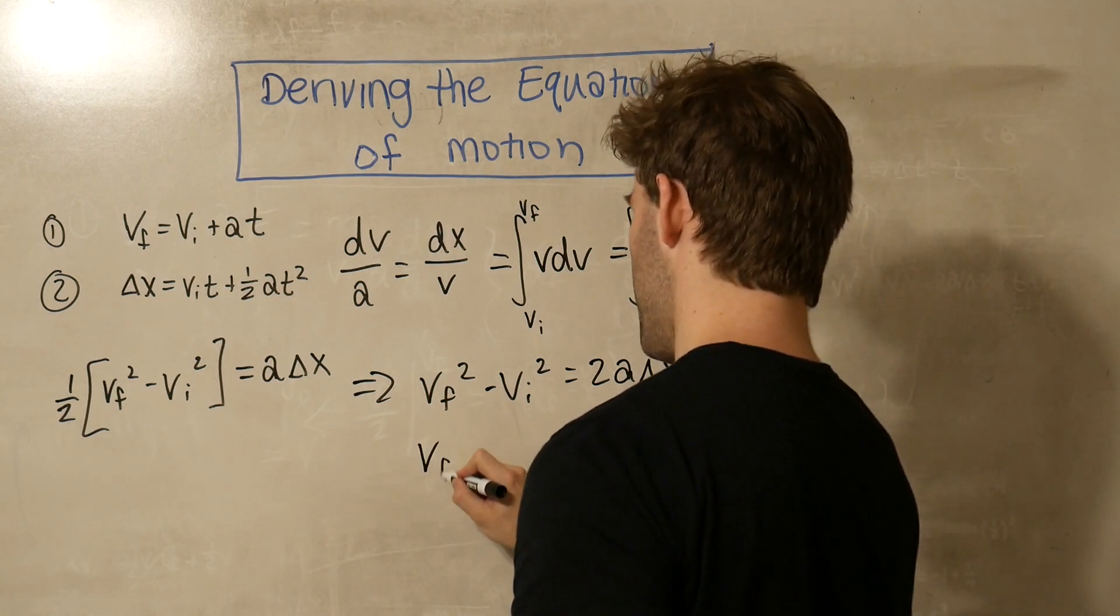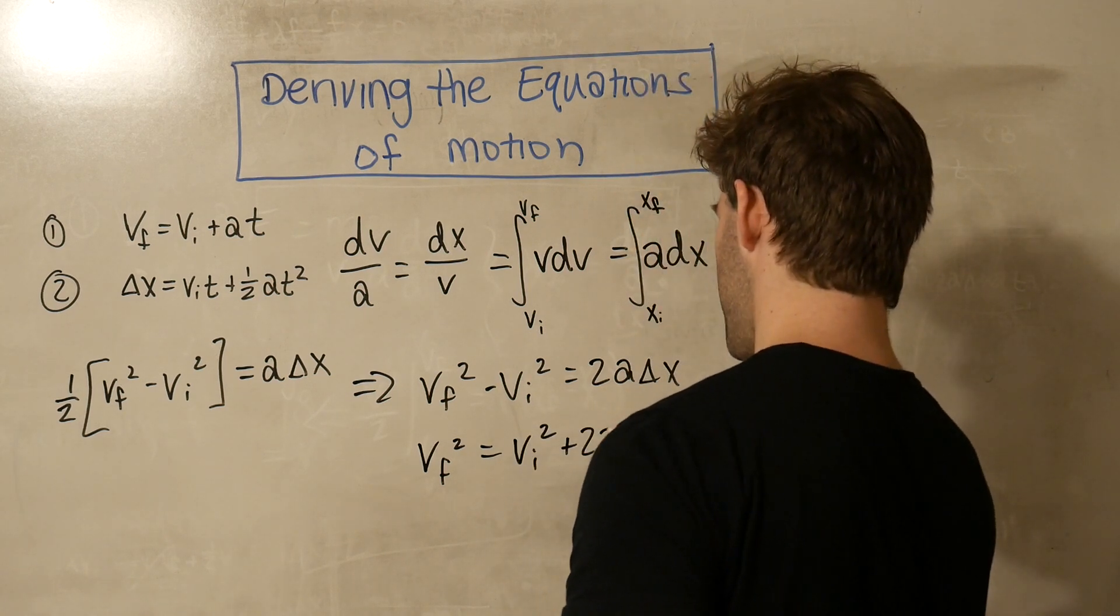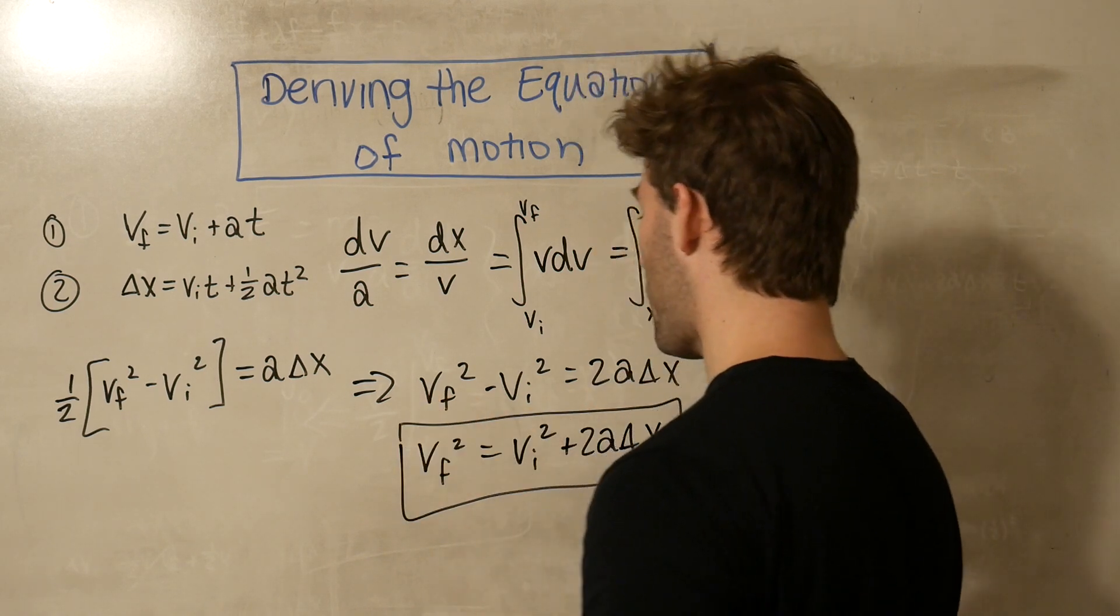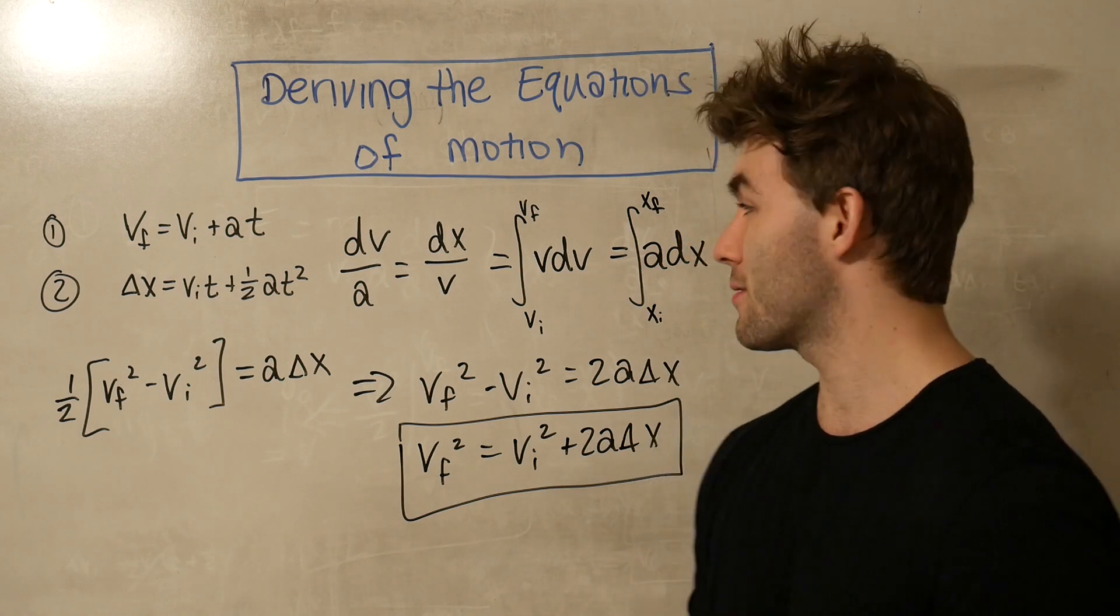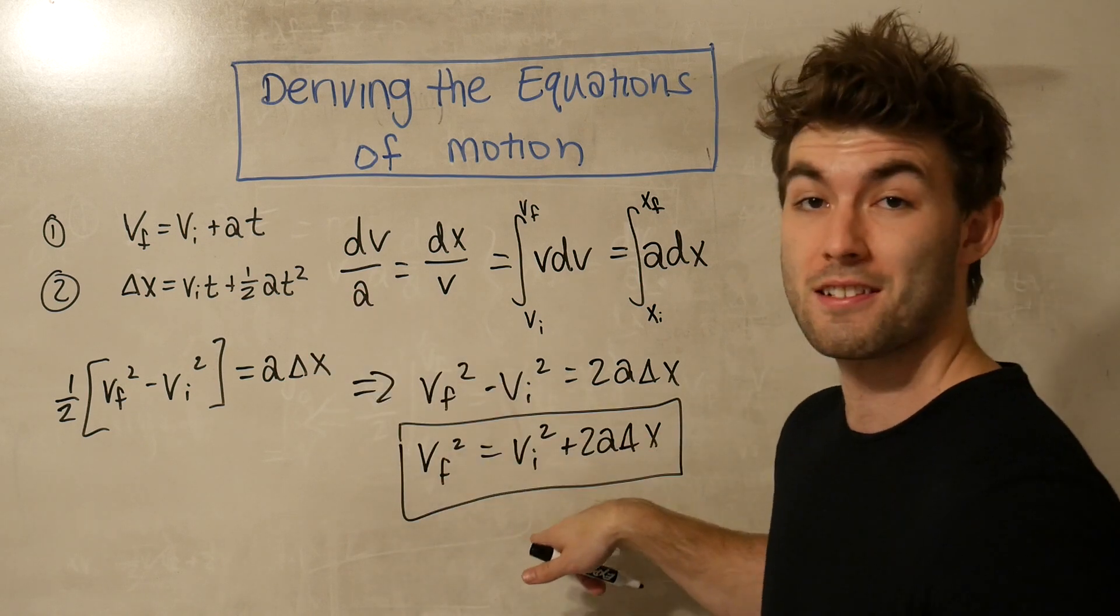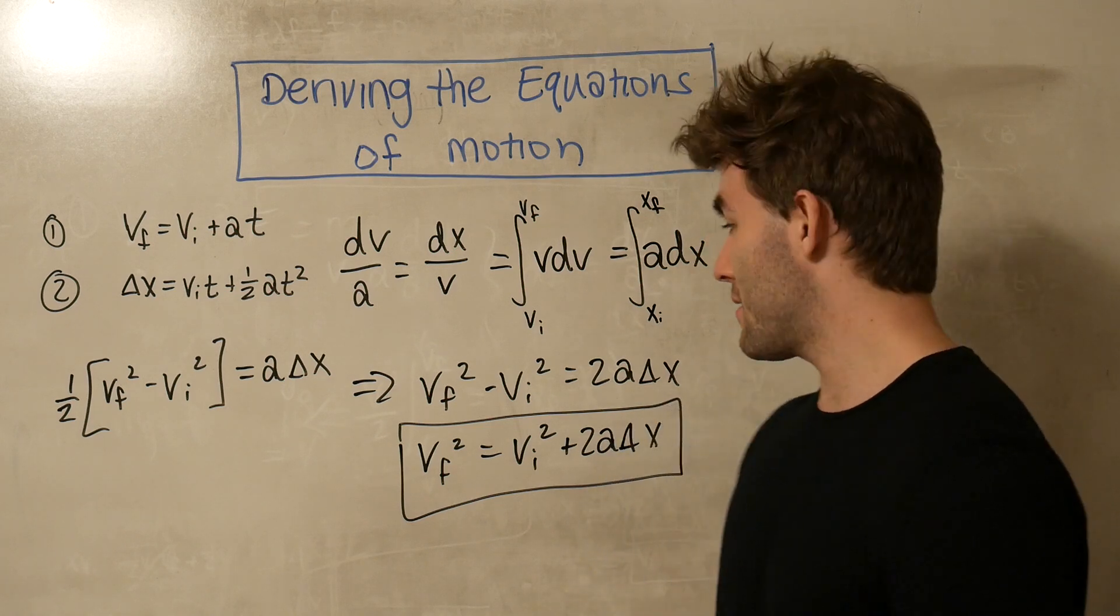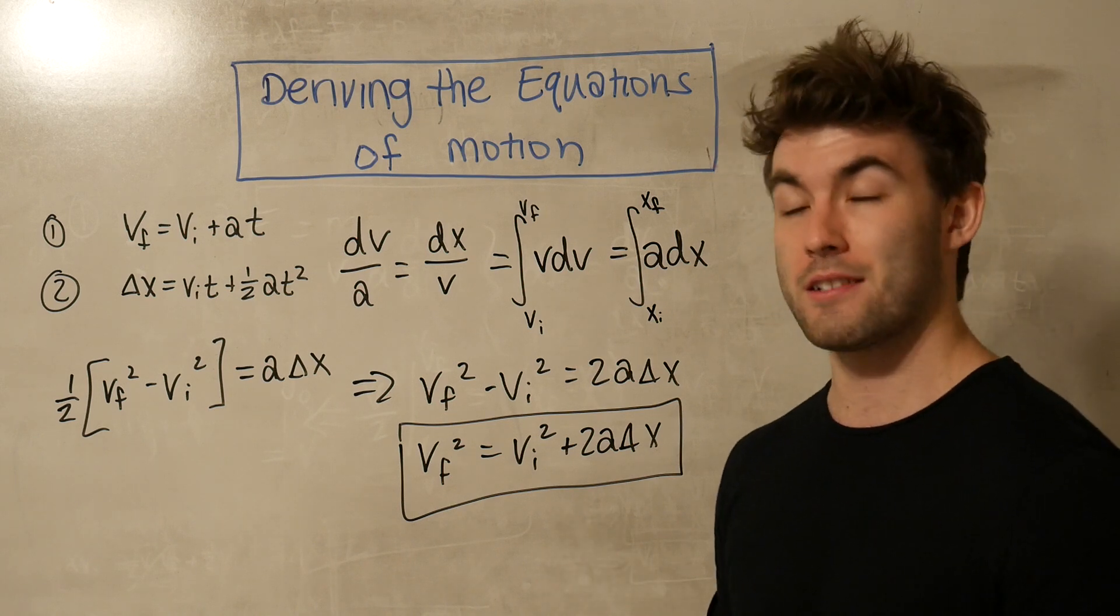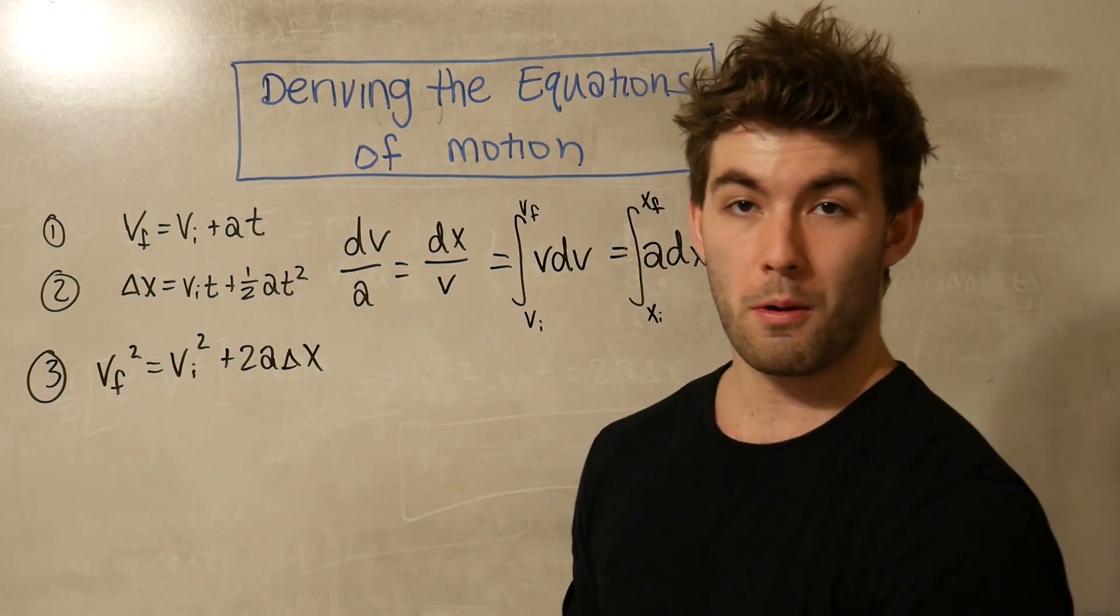And finally, vf squared is equal to vi squared plus 2a delta x. And that is our third and final equation of motion. And this is arguably one of the most powerful ones because it sort of contains the other two, right? We used information from the other two to get to this conclusion. The one bit of information that's hidden is you'll notice that there's no time dependence. And that's why this third equation is sometimes known as the time independent equation of motion.